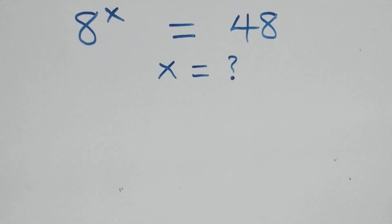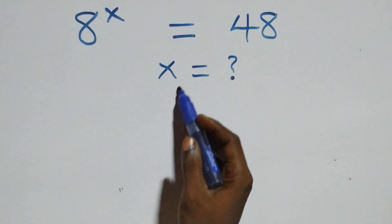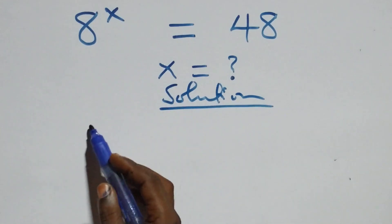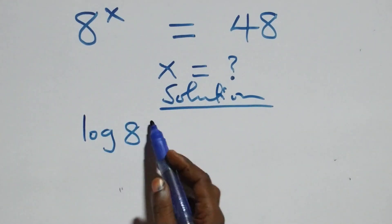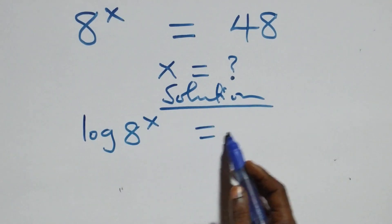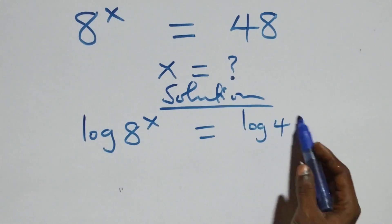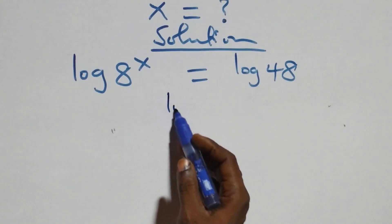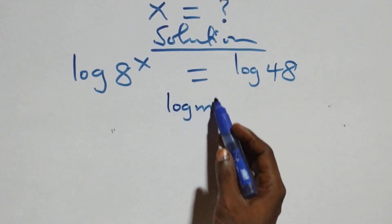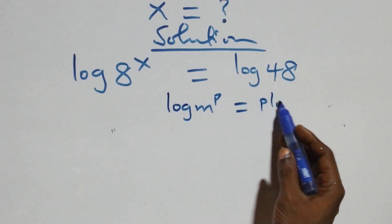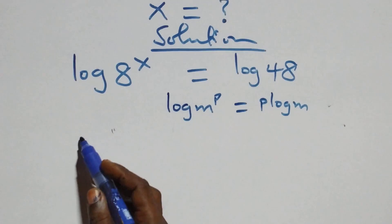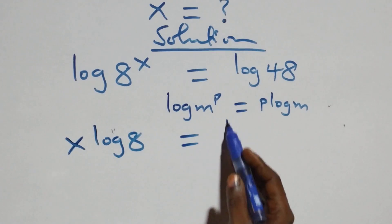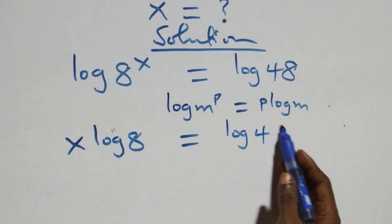Hello, you are welcome. How to solve this nice exponential equation. From what we have here, we take the log on both sides — that is, log 8 raised to power x equals log 48. Next step, we apply the power rule of log: when we have log m raised to power p, this is the same as p·log m. So this becomes x·log 8 = log 48.